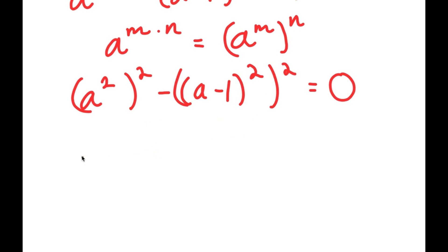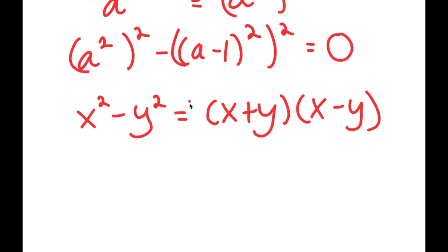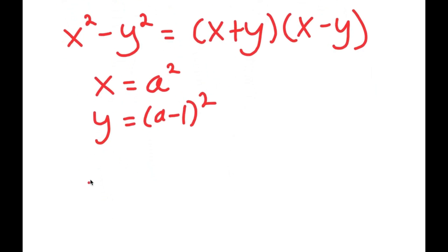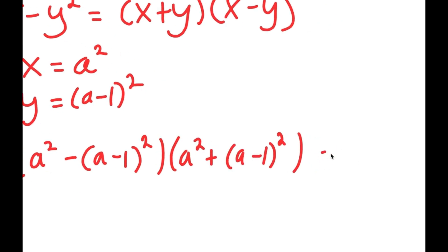Now if I have something in the form x squared minus y squared, this equals x plus y times x minus y. In this case x is a squared and y is a minus 1 squared, so by using this property I get a squared minus a minus 1 squared times a squared plus a minus 1 squared equals 0.